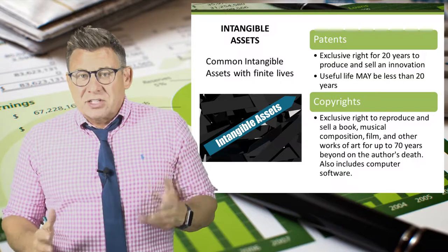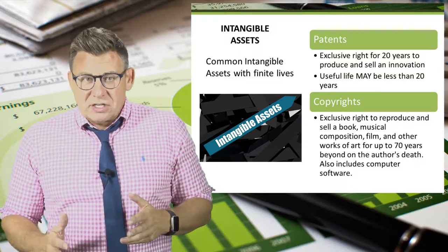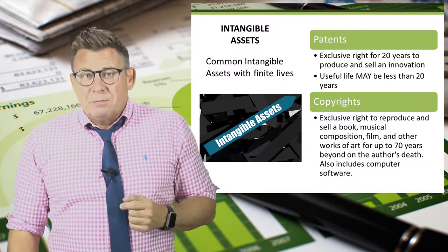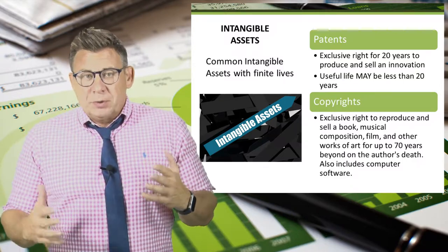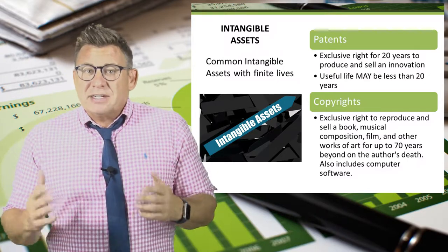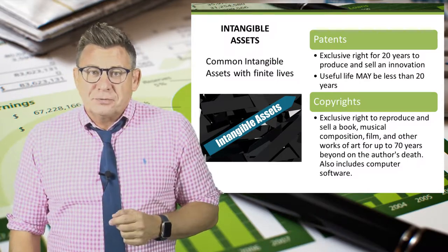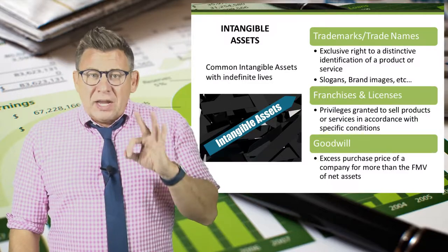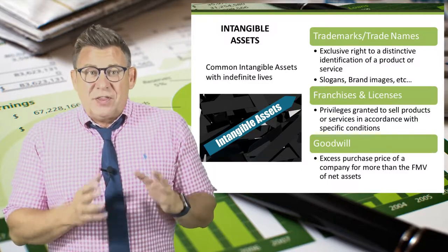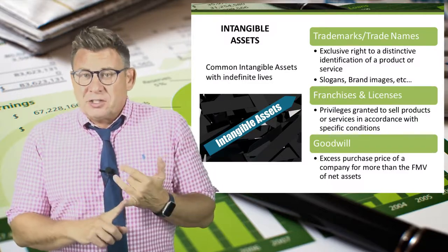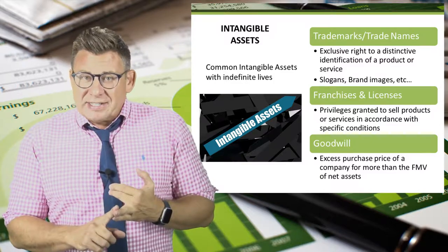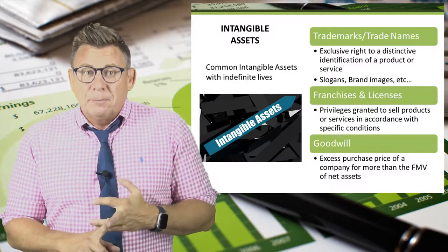Copyrights are similar protections, but they cover works of art and software. The legal protection is the author's life plus 70 years. Three common types of intangible assets with indefinite lives are trademarks and trade names, franchises and licenses, and goodwill.